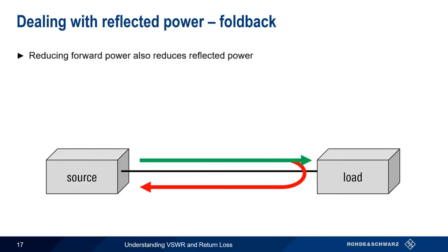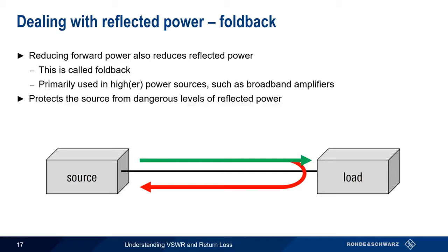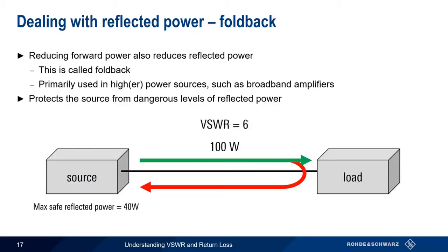Another way to reduce the level of reflected power is to reduce the level of transmitted power. This is called foldback and is primarily used in higher power sources such as broadband amplifiers. The main application of foldback is protecting the source from high levels of reflected power, which can cause performance degradation and even permanent damage. For example, if our source has a maximum safe reflected power of 40 watts, a VSWR of 6 with 100 watts forward power would reflect 50 watts — exceeding the safe limit. By lowering transmit power to 80 watts, the reflected power falls back within the safe limit.